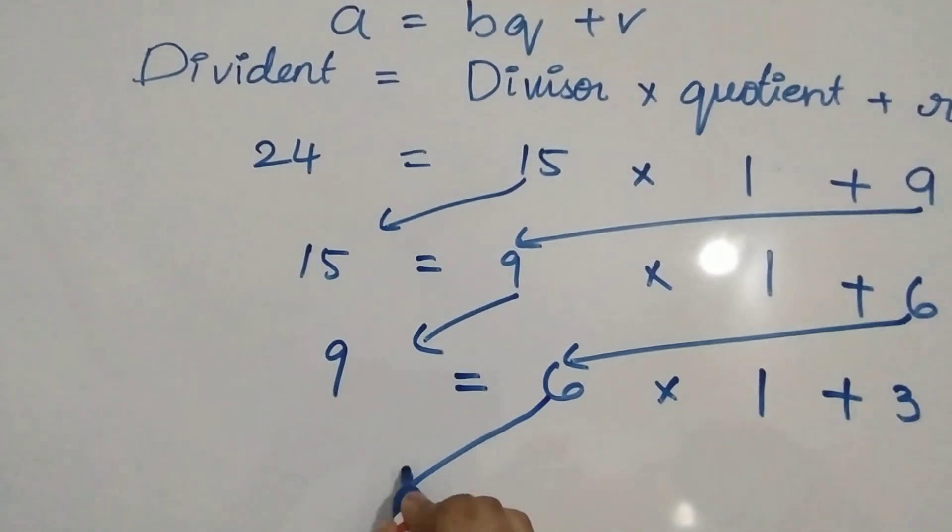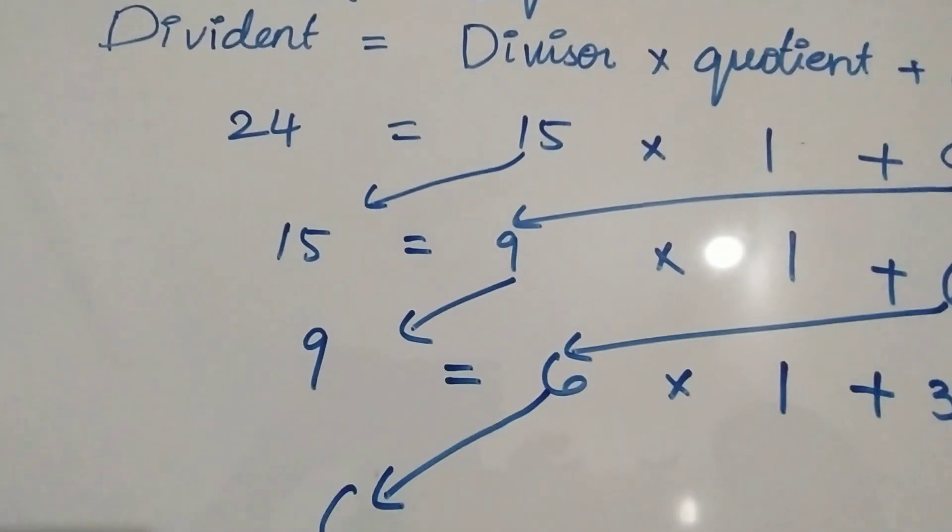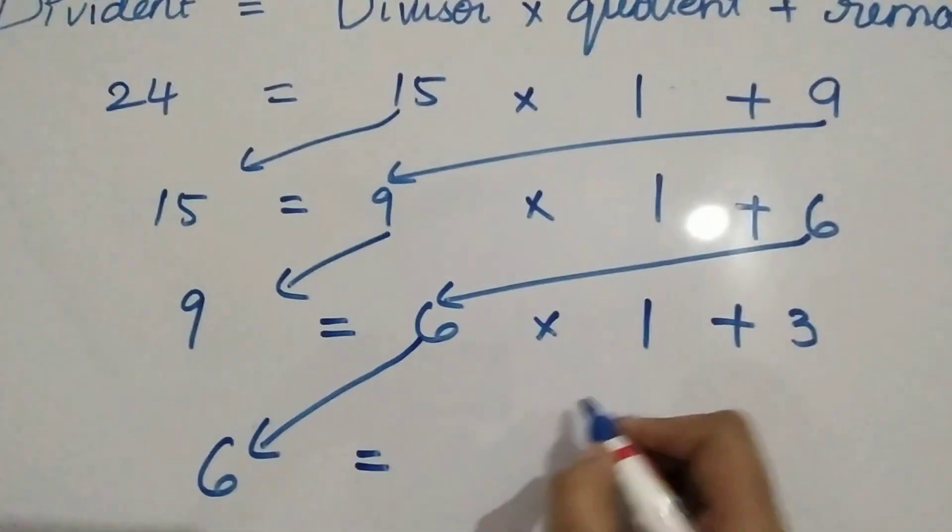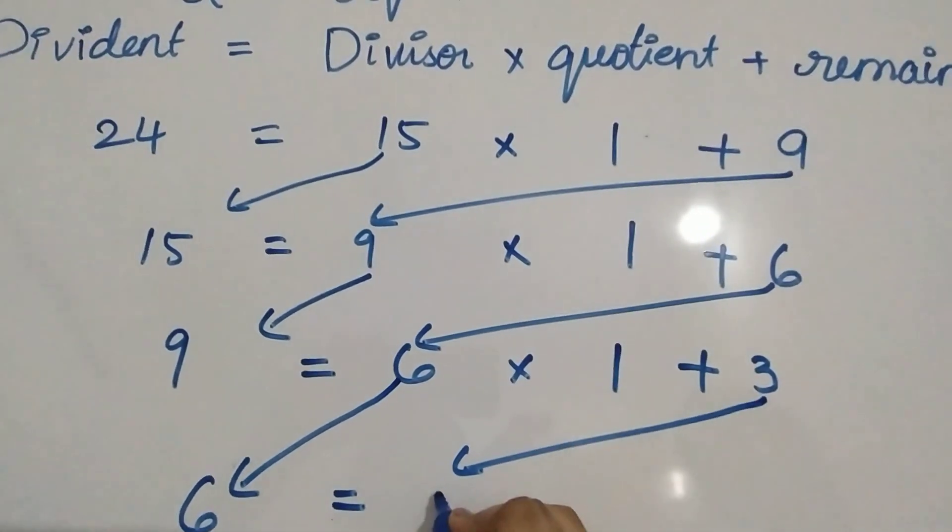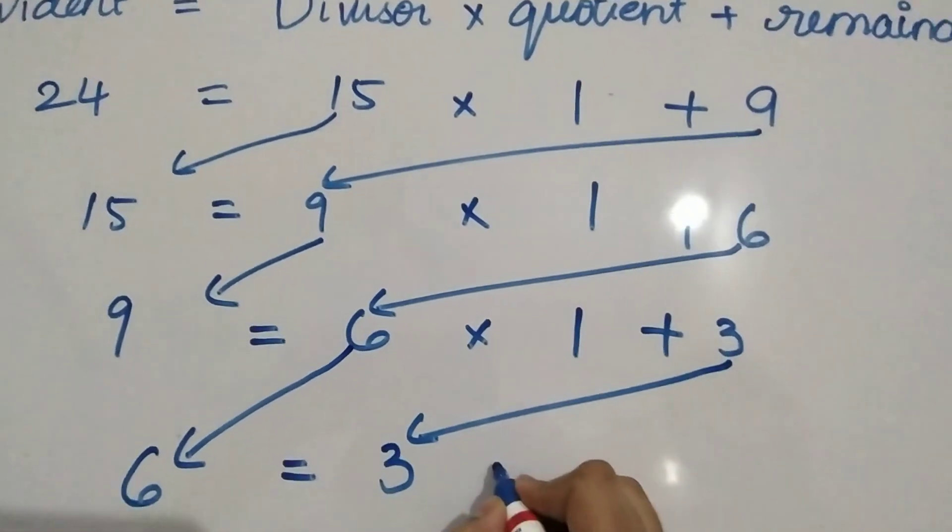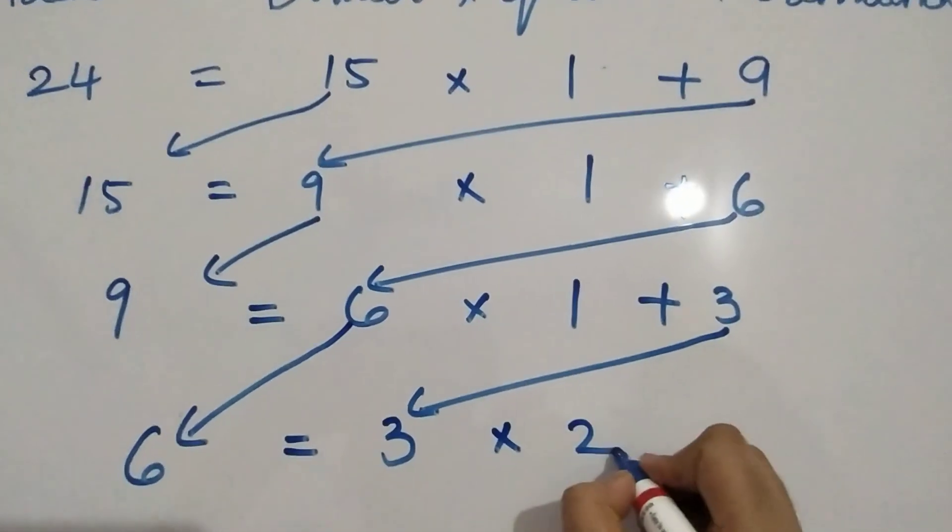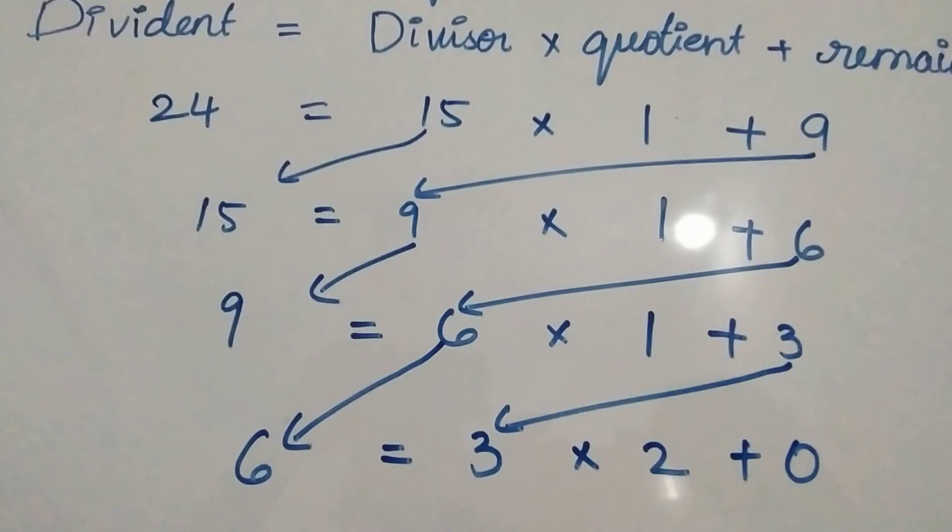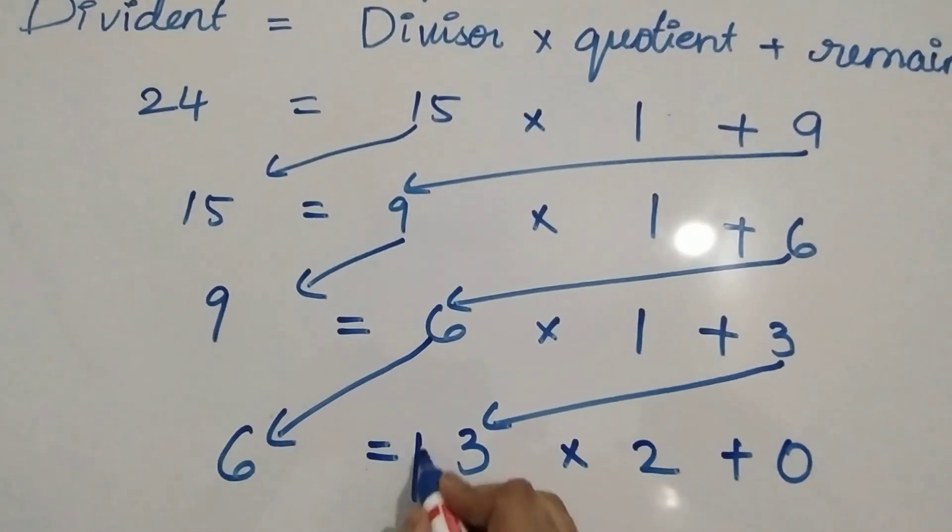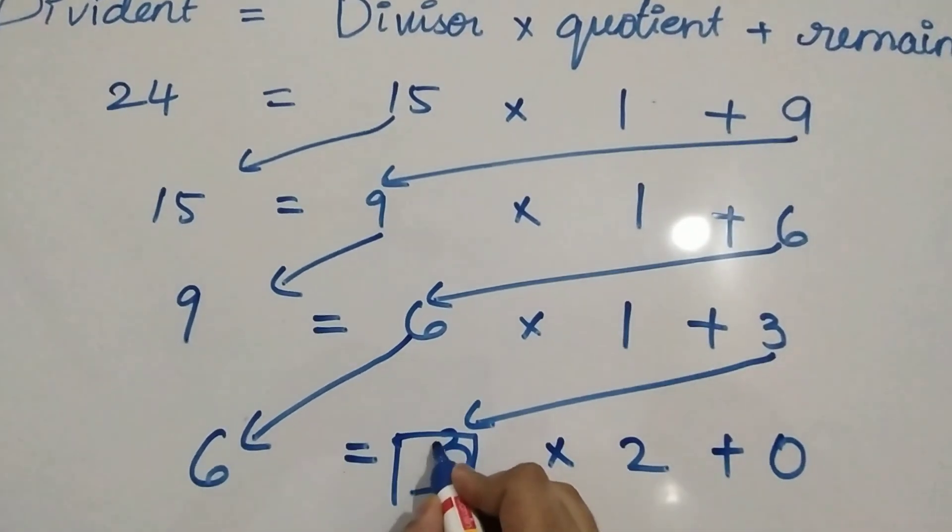6 becomes the next dividend, 3 becomes the next divisor. It goes twice. So HCF here is the divisor in the last step which is 3.